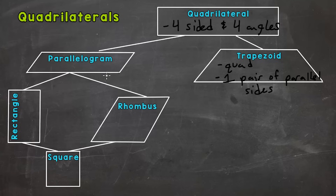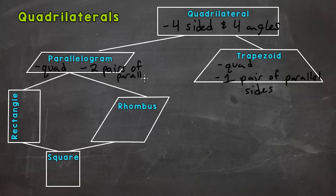If we go to the left on the chart, we have a parallelogram. A parallelogram is a quadrilateral, but it has to have two pairs of parallel sides — getting a little more specific as we work our way down.